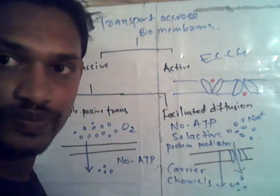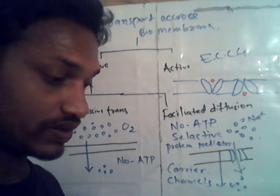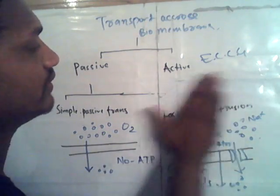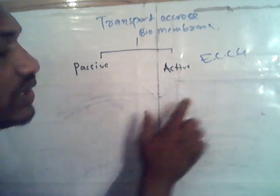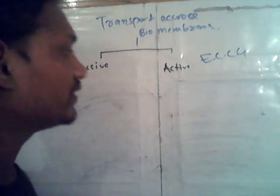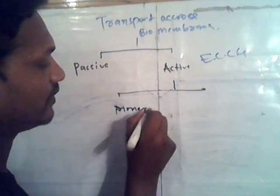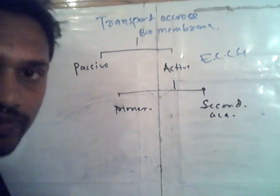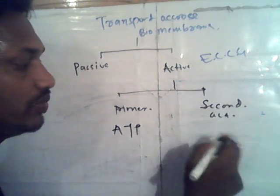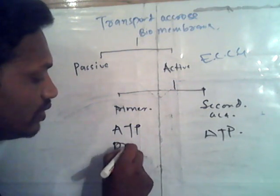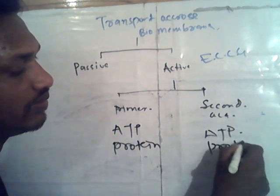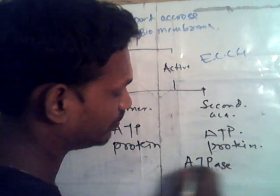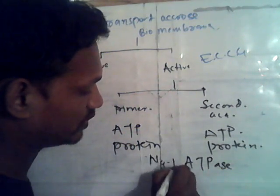This is all about facilitated diffusion. Now, what about active transport? Active transport is of two types: primary active transport and secondary active transport. One thing about primary active transport — it requires ATP. It also requires a protein mediator. The best example of primary active transport is sodium-potassium ATPase.